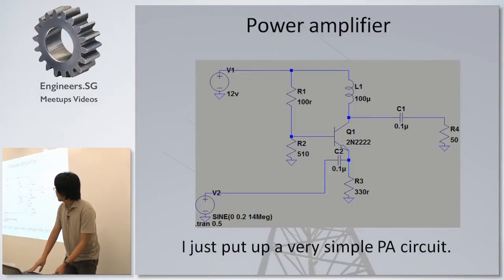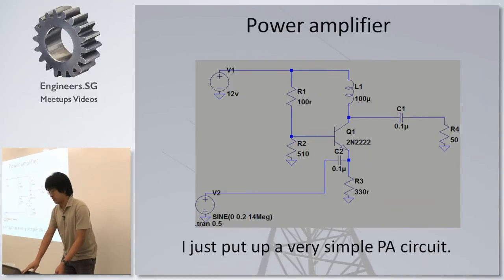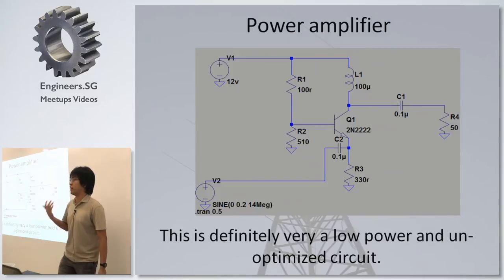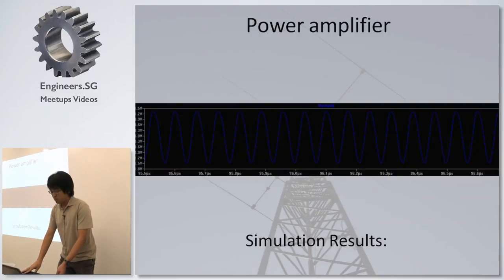For the power amplifier stage, I'll just use a very simple 2N2222, and I just connect it to my oscillator stage. It is a very low power and a very unoptimized circuit, because I haven't done things like impedance matching or filtering of harmonics and such, which is required, essential, when you're trying to build a transceiver for use on air. And here, just a bit simulation results, not much basically.